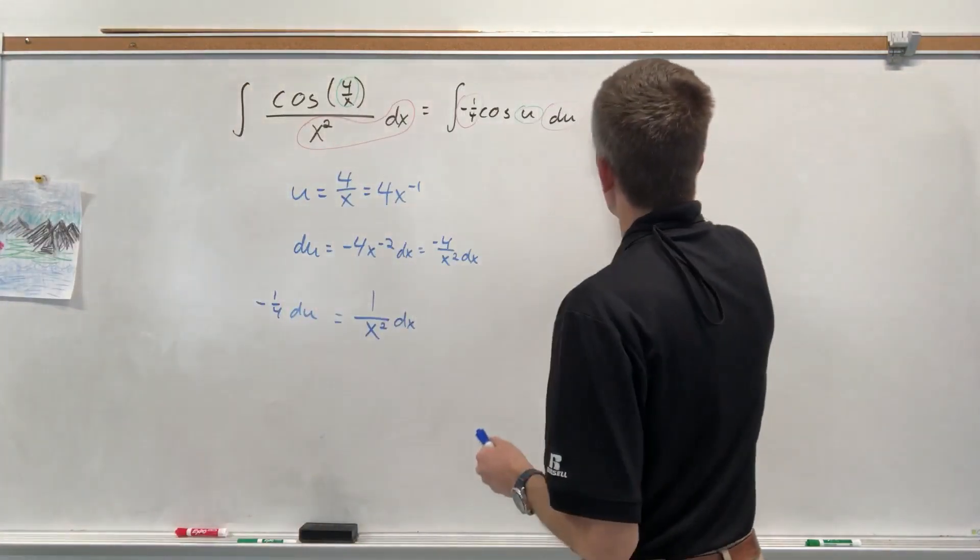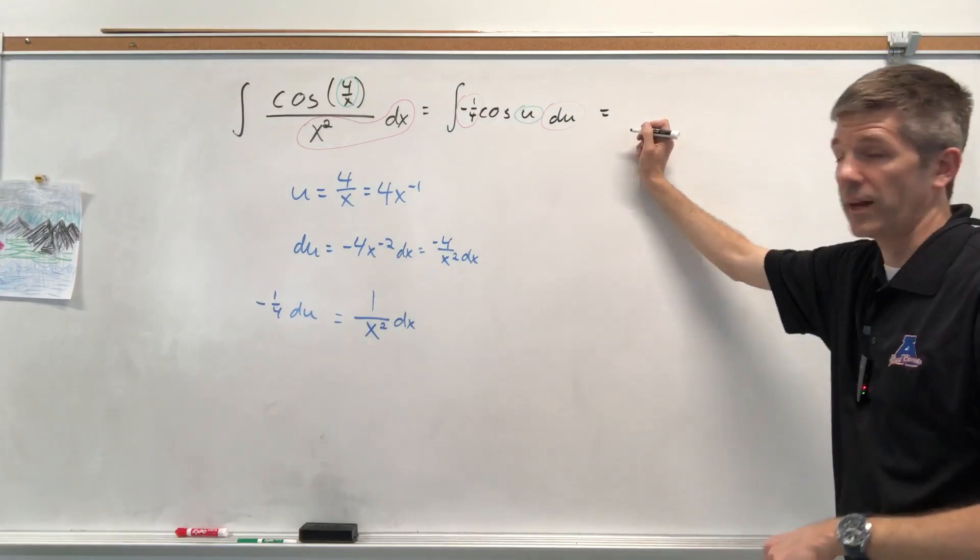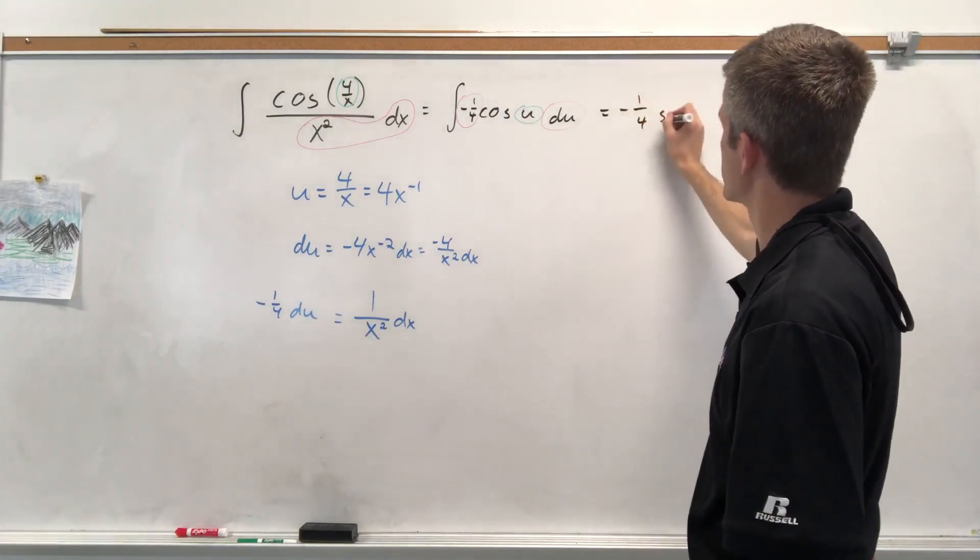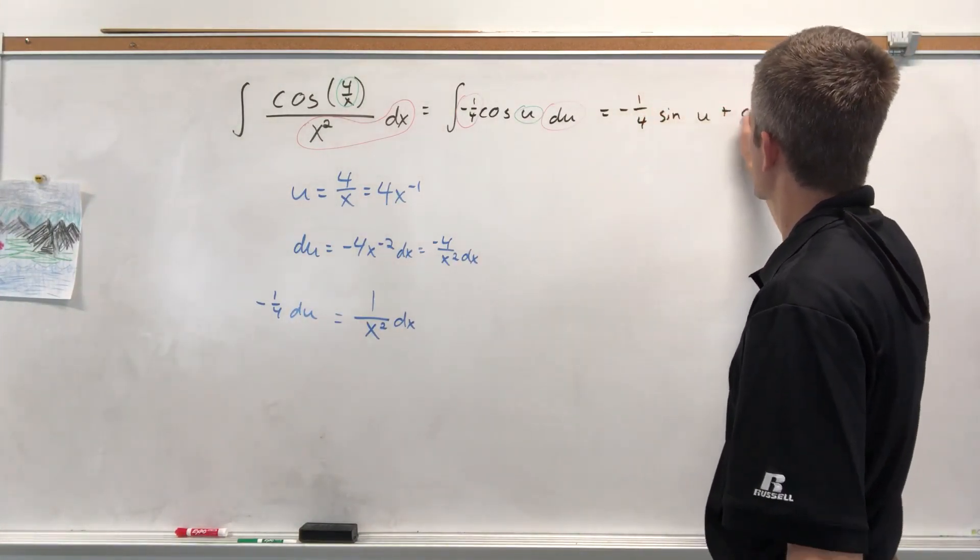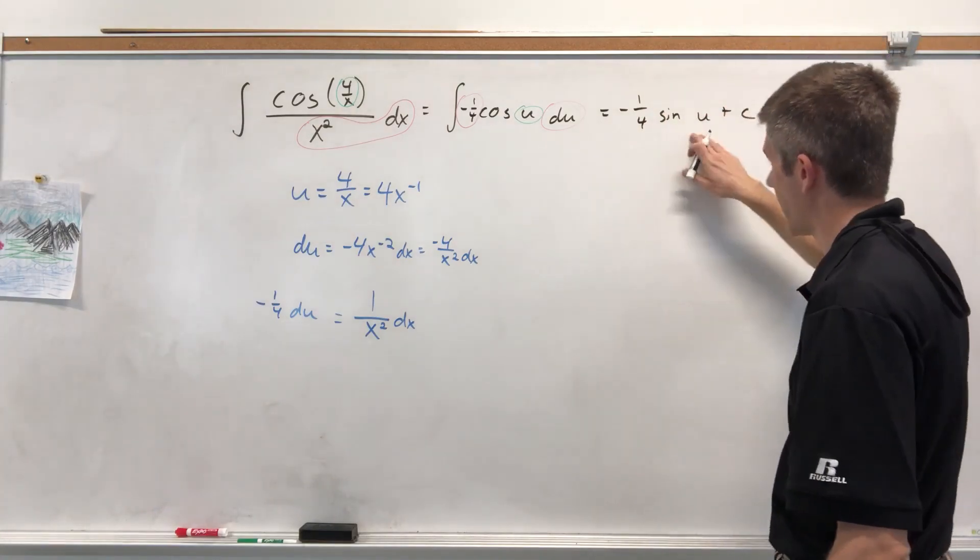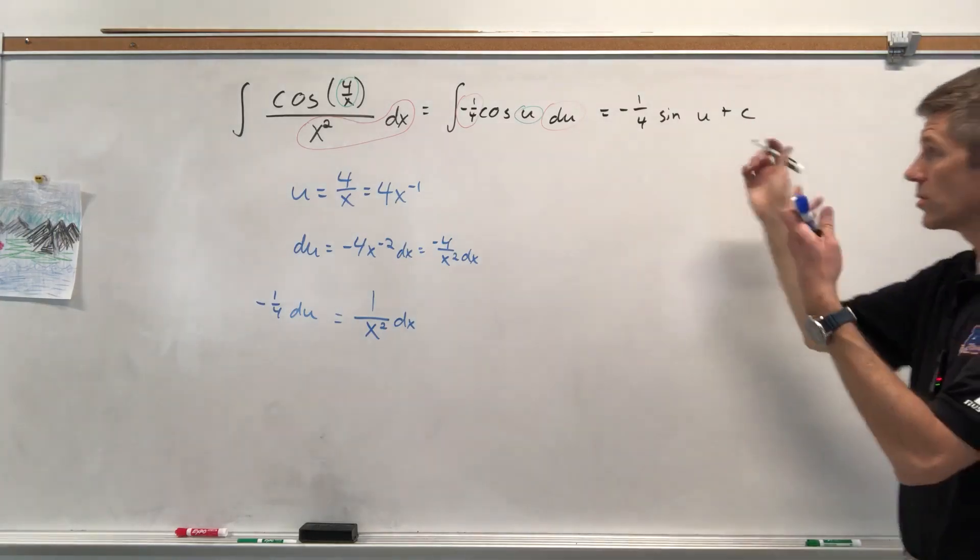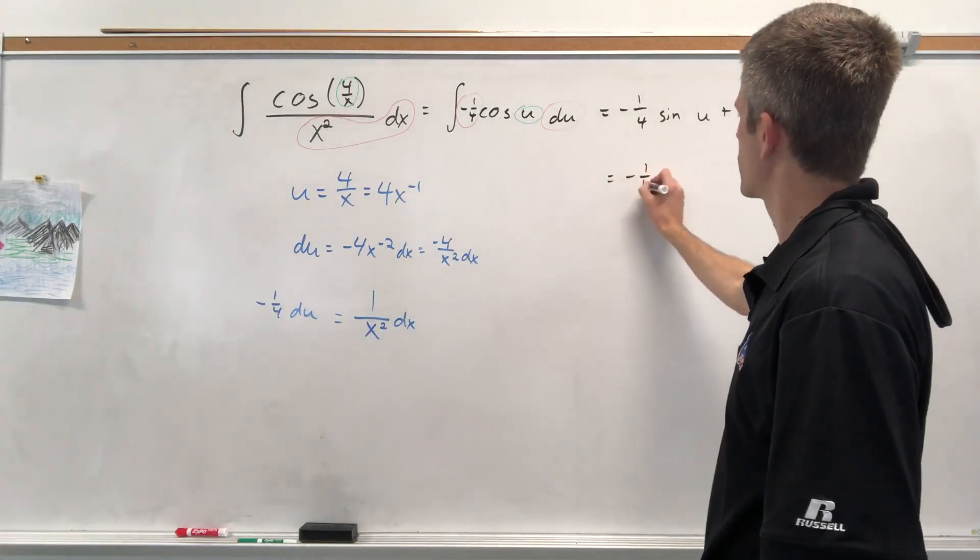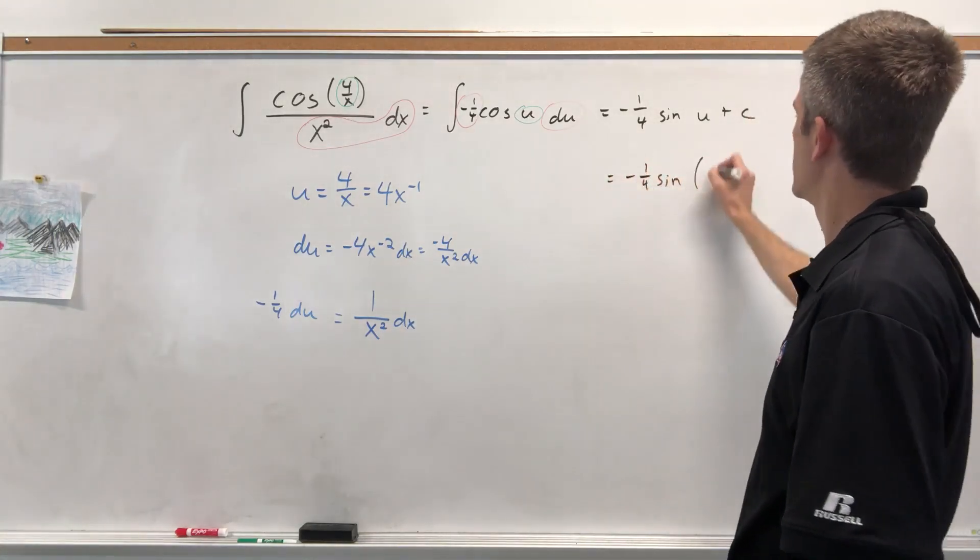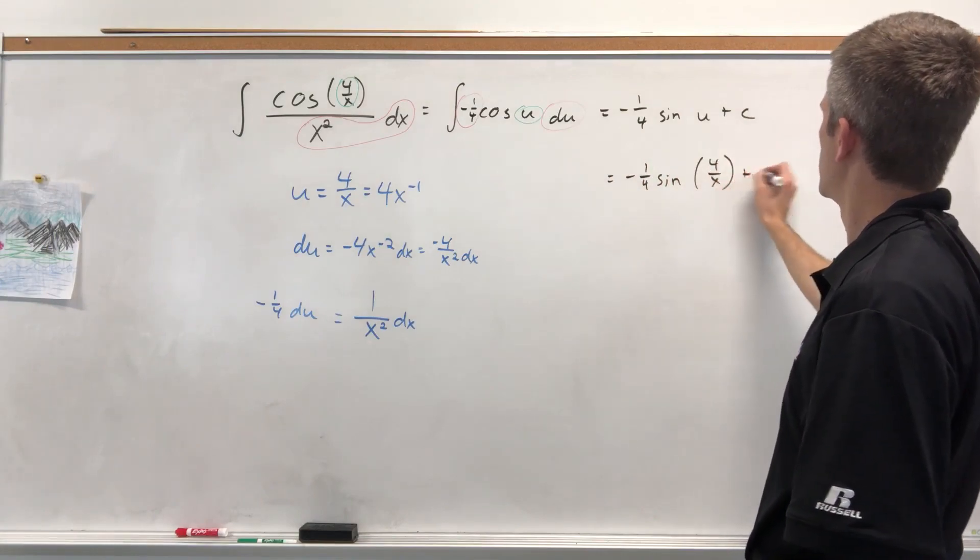Anti-derivative of negative 1 4th cosine would be, watch your signs, negative 1 4th sine, no pun intended, because the derivative of negative 1 4th sine is negative 1 4th cosine. And then we will take the U, plug it back in. So negative 1 4th sine of U and then plus C.